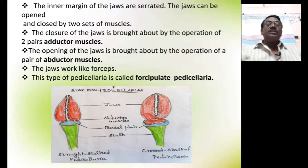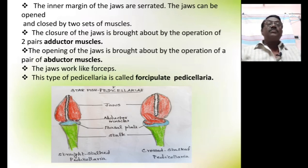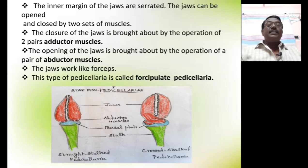In this diagram you can see the structure of the pedicellaria. The green-colored structure is the stalk, the sky-blue colored structure is the basal plate — one of the ossicles. The remaining two ossicles are shown in red and they have powerful jaws. The inner margin of the jaws is serrated, and the jaws can be opened and closed by two sets of muscles. Closure is achieved by the adductor muscles, and opening is brought about by the abductor muscles. Both jaws work like forceps, and because of this these pedicellaria are called forcipulate pedicellaria.